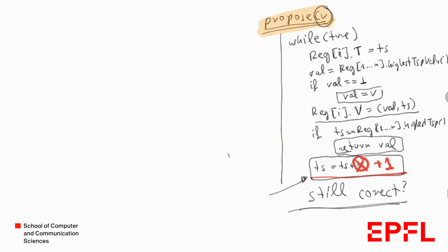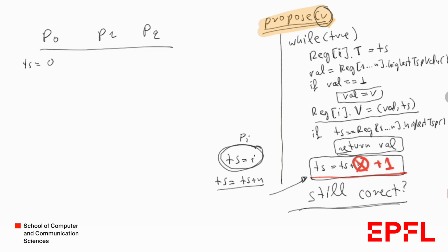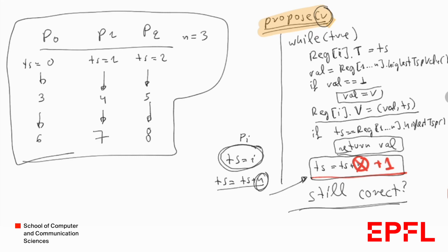Initially every process P_i has a timestamp initialized to i, and then we keep increasing the timestamp by n. For example, with three processes P0, P1, P2: initially timestamps are 0, 1, 2. In the next round they become 3, 4, 5. Then 6, 7, 8. So because we keep adding n to the timestamp of each process, timestamps by different processes are always different.